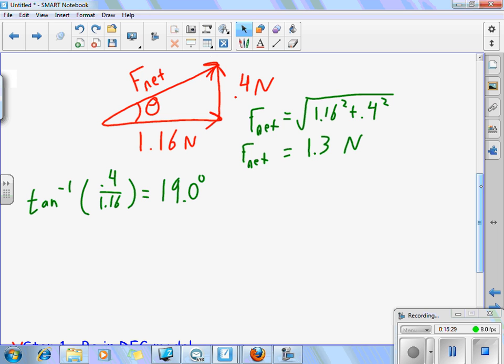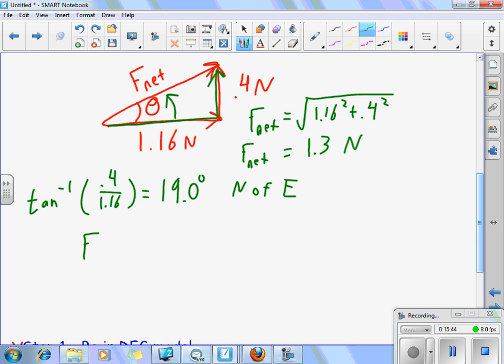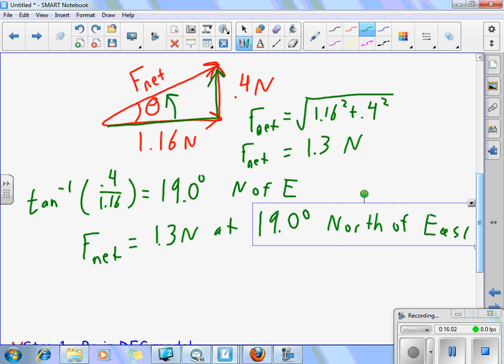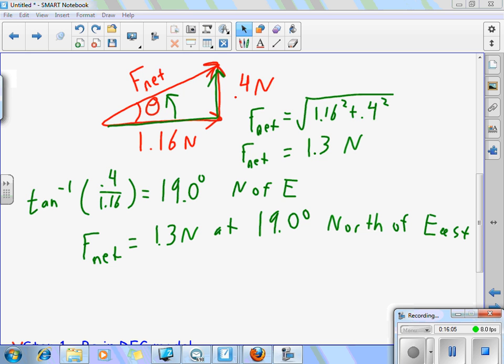A net force has a direction, so we want to make sure we calculate that. I always find it convenient to take the inverse tangent of our opposite over our adjacent, which gets 0.4 divided by 1.16. You have to be in degrees mode. Another reason why it's so vital. In radians, you're going to get a very goofy answer. Your result should be 19.0. Looks to me like north of east. Because we were going east, and then we had to go north from it to form our angle here. That tells us that our net force is 1.3 N at 19.0 degrees north of east.